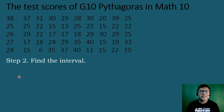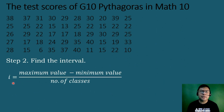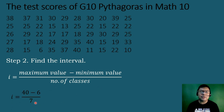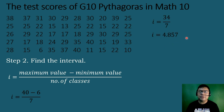The next step is to find the interval or the class width using the formula: class width = (maximum value − minimum value) / number of classes. The maximum value is 40 and the minimum value is 6, so 40 − 6 = 34, and 34 ÷ 7 = 4.857, which rounds to 5. Therefore, the class width or interval is equal to 5.